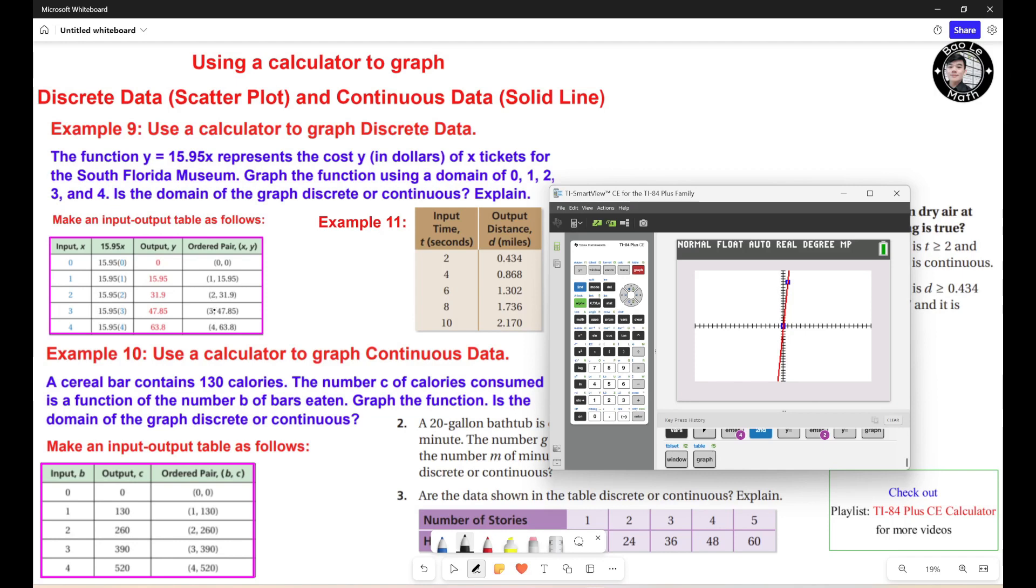Now I want to see more points right here. I need to extend my window range, so I hit window. This one, negative 20 and 20, that's okay, because the input value is just 0 to 4, so you don't need to make it too big. But the y value is going to be right here. The maximum right here is 63.8, minimum 0. So basically, I just leave this negative 20, but the maximum right here, I'm gonna put like 100. So I hit graph. I see more points.